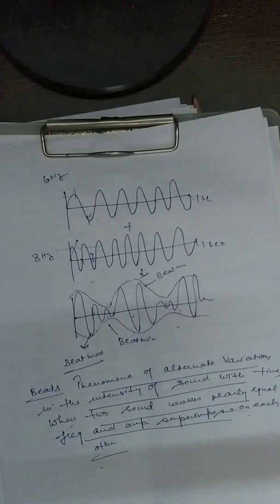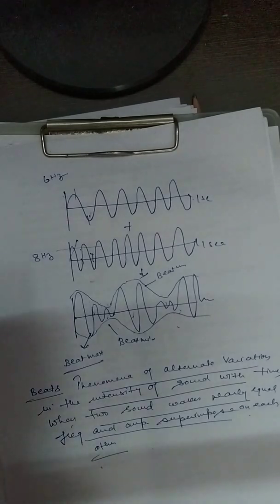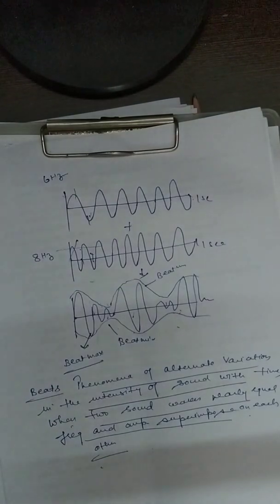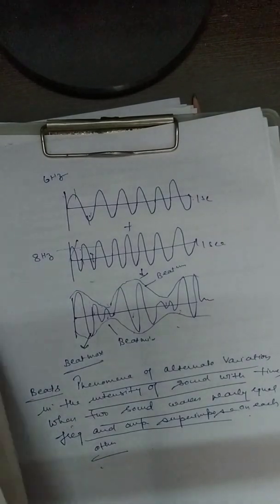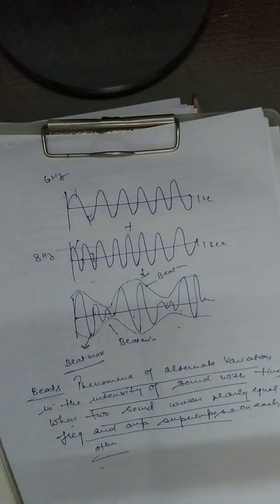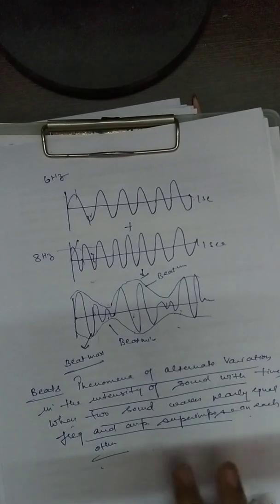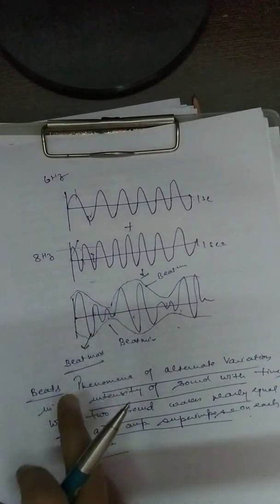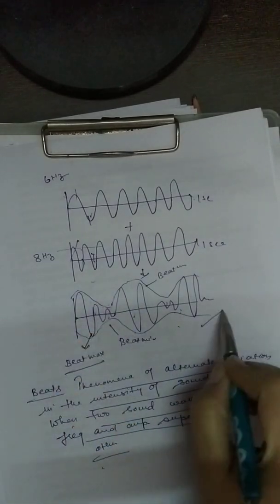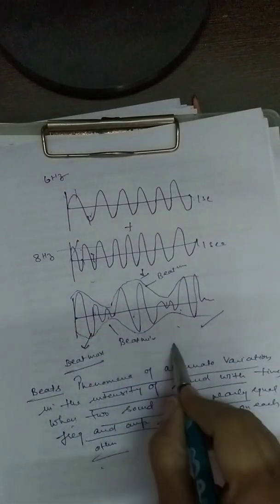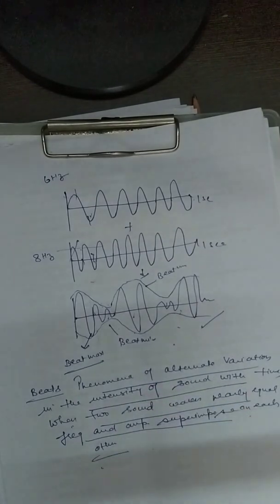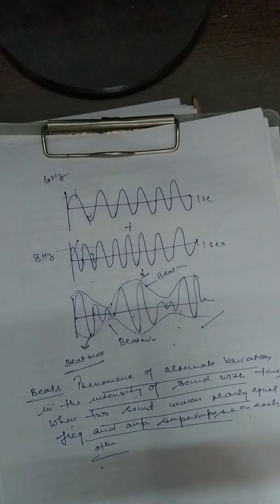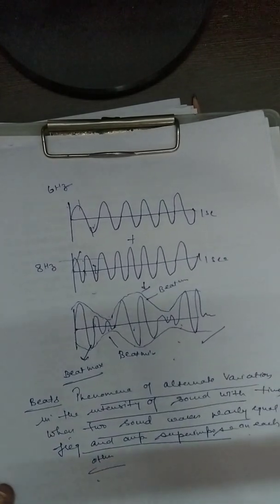You will observe in music that the sound increases and decreases — those are beats. Now we go to the analytical treatment. In analytical treatment, we will prove what the frequency of these beats is. The beat frequency is the difference in the frequency of the two sources.